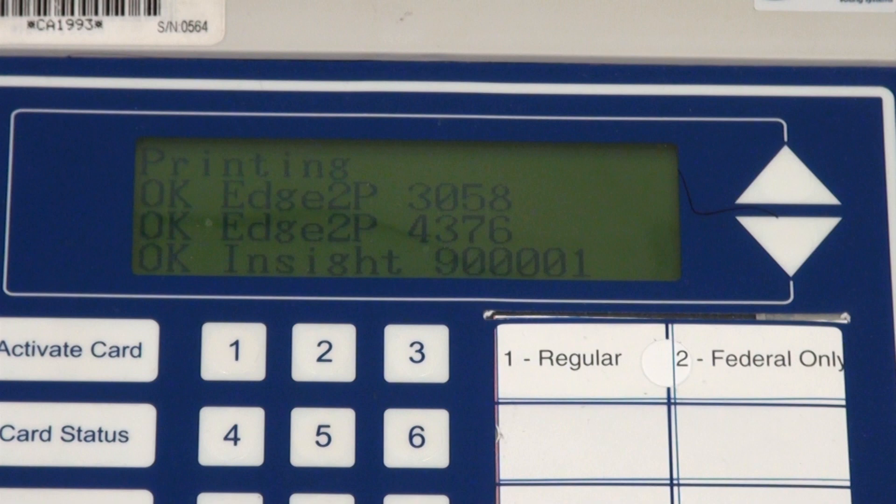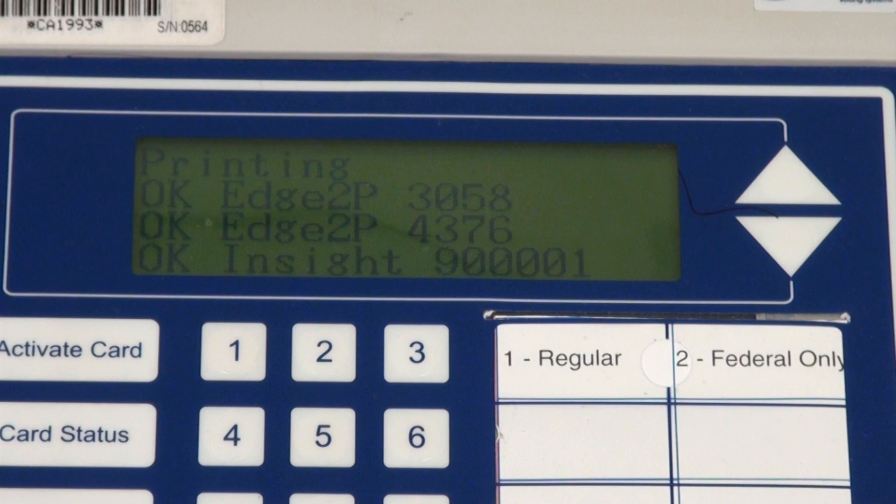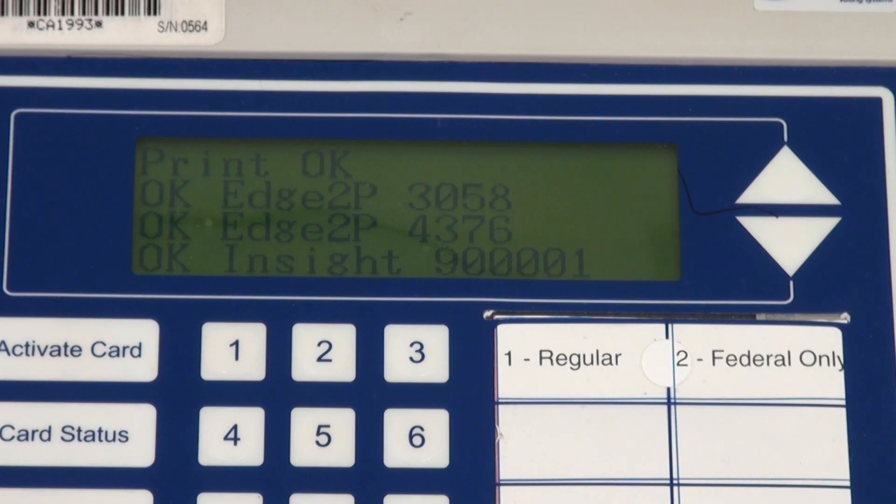When the consolidation is finished, the display will read OK for each item consolidated, and the printer tape will read Success. After the consolidation tape is done printing, Print OK will appear on the display.